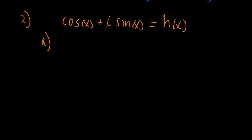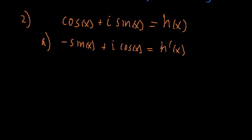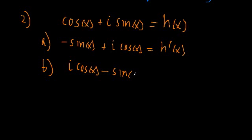We're first going to take the derivative of both sides. The derivative of cosine is minus sine of X, and the derivative of I times sine is I times cosine of X. The derivative of H of X we'll just call H prime of X. For the next manipulation, we're going to multiply the left and right-hand side by I. So we get I times cosine of X plus I squared times sine of X — or just negative one times sine of X, or minus sine of X — is equal to I times H of X.